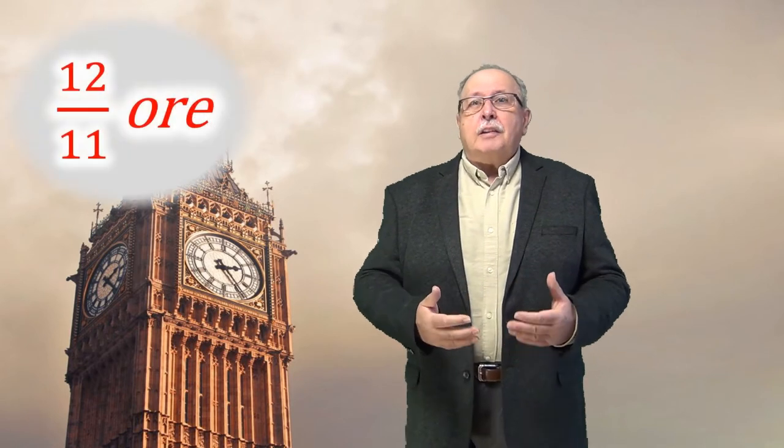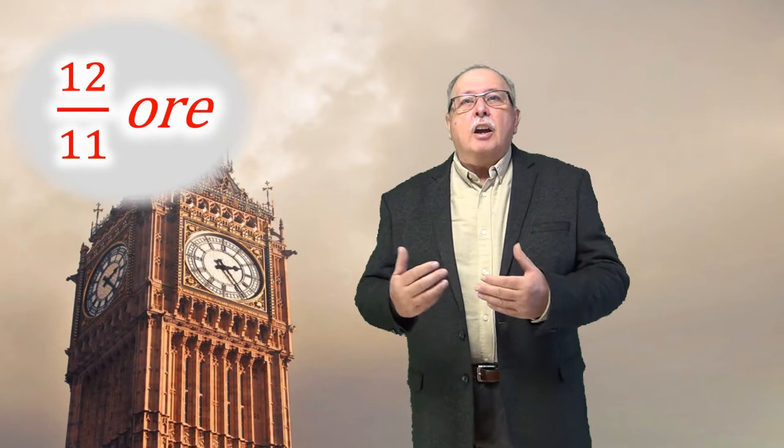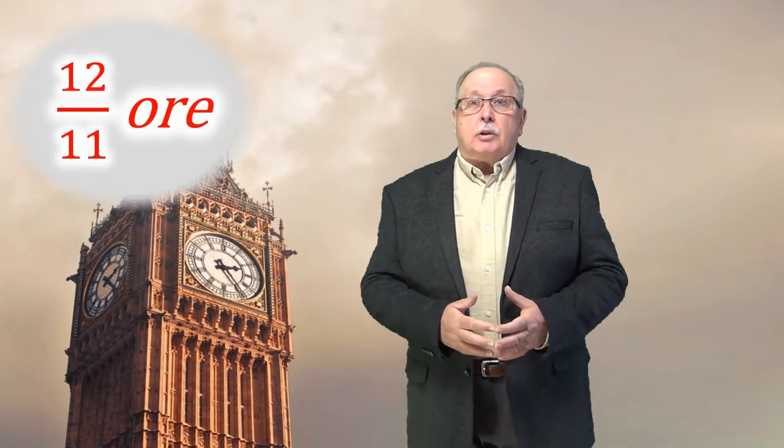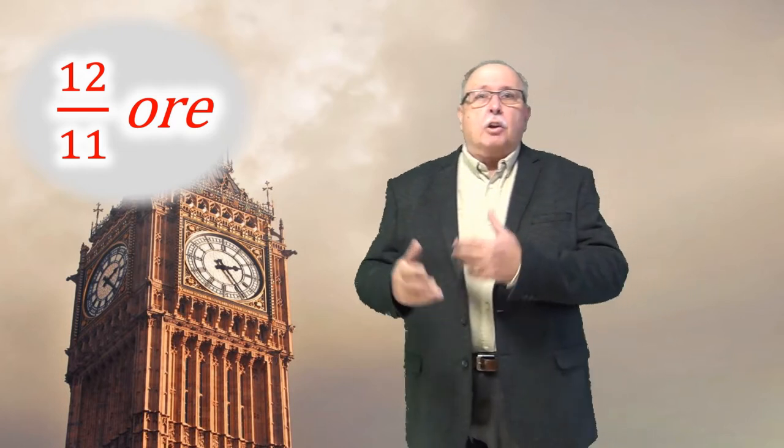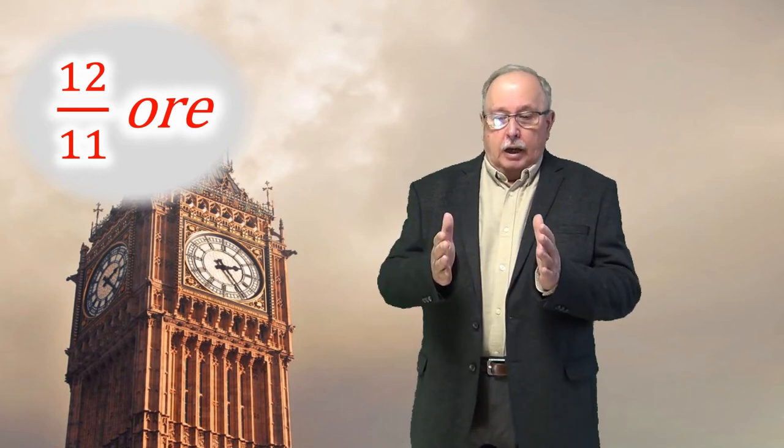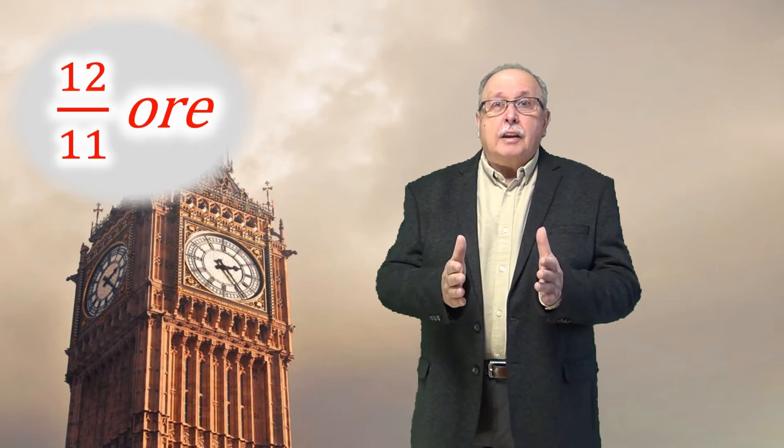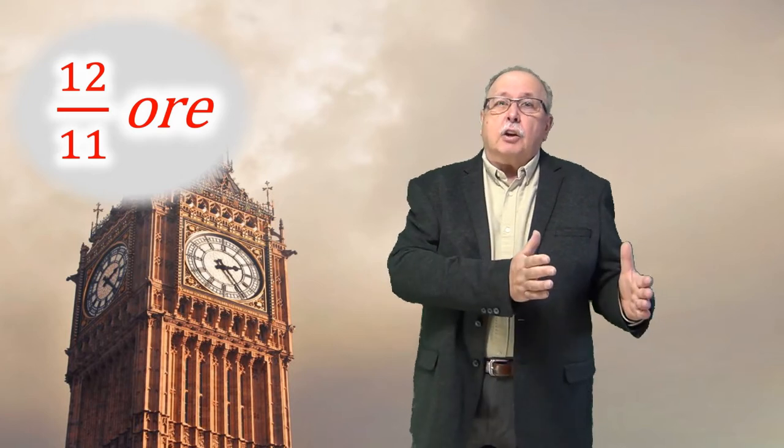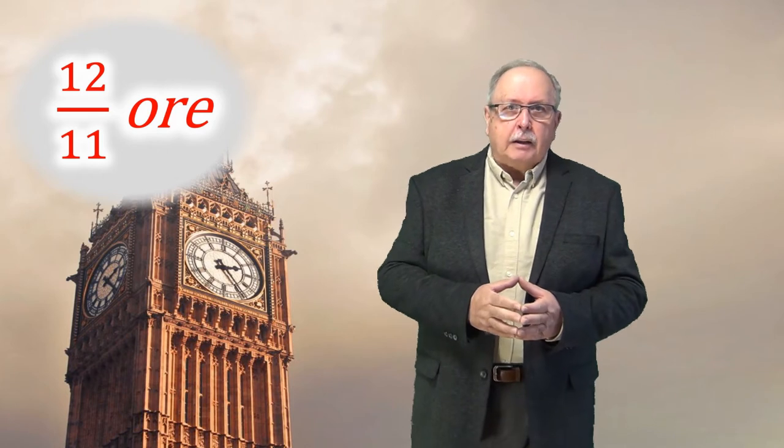Și atunci, asta înseamnă că în douăsprezece ore, limbile ceasului se suprapun de unzprezece ori, ceea ce înseamnă că timpul care trece între două suprapuneri consecutive este de douăsprezece supra unzprezece ore. Pentru că viteza limbilor ceasului este constantă.